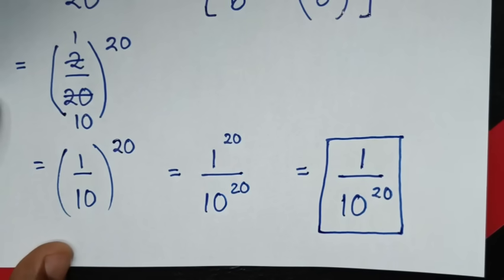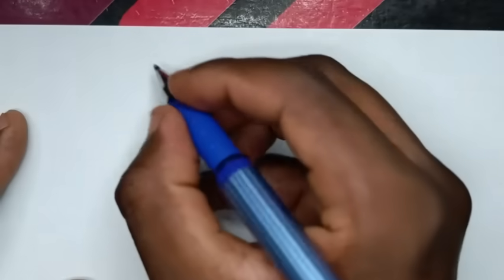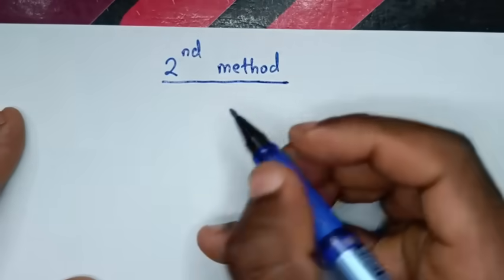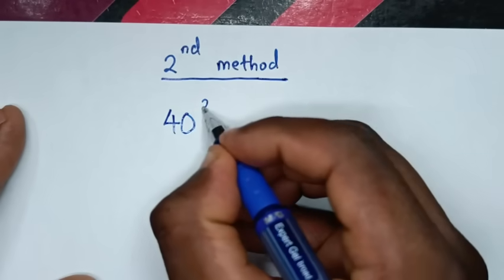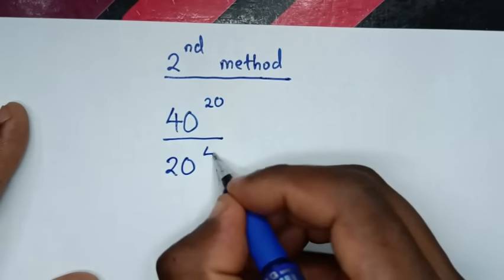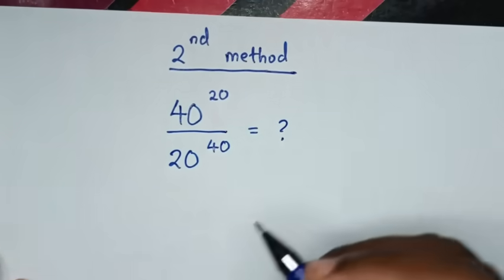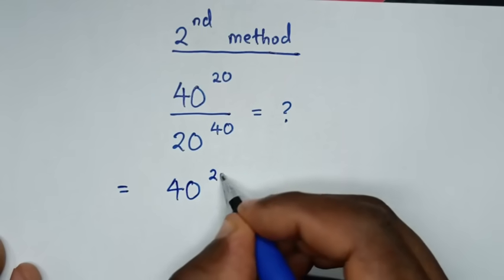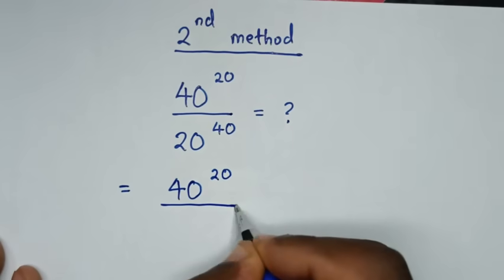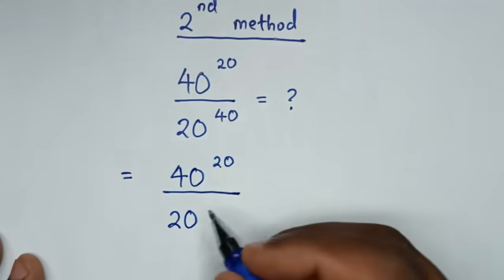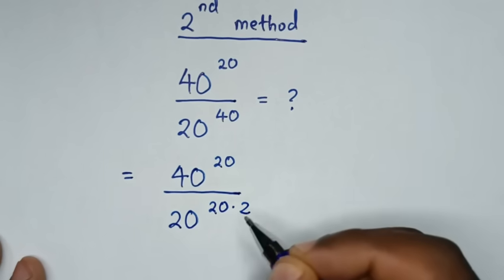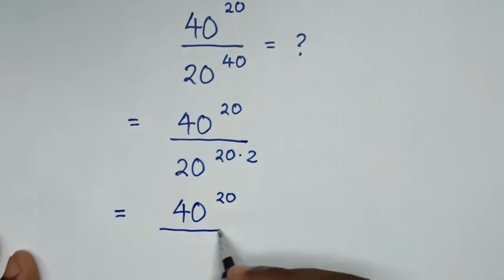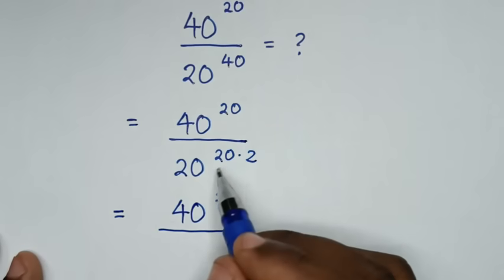Or, to solve by another method — let's call this the second method. From the second method, our problem is 40 power of 20 over 20 power of 40. It will be equal to: in the numerator we write 40 power of 20, then over in the denominator it is 20 power of 40, where 40 is the same as 20 times 2. Then it will be equal to 40 power of 20, then over 20 power of 20 times 2.